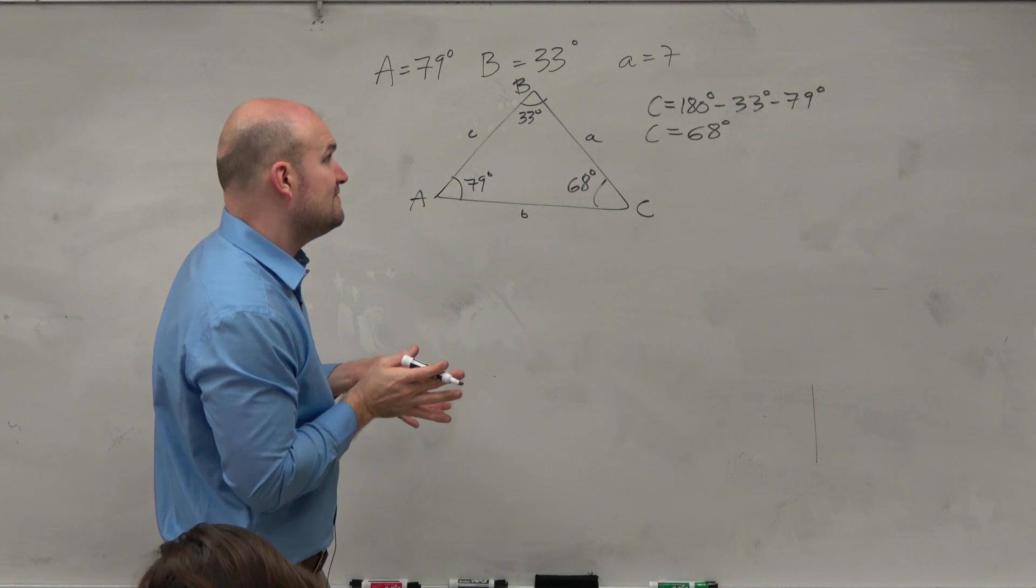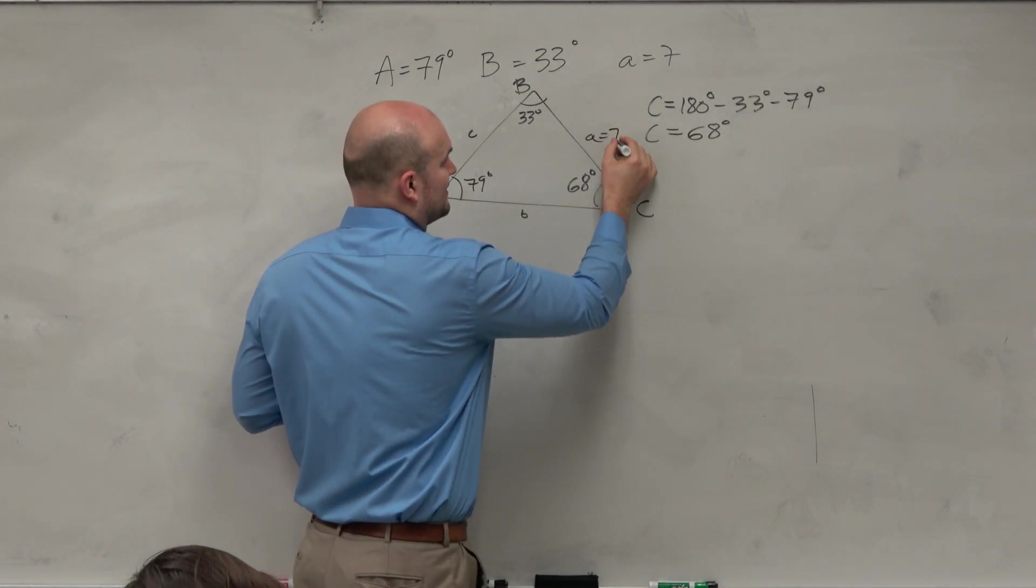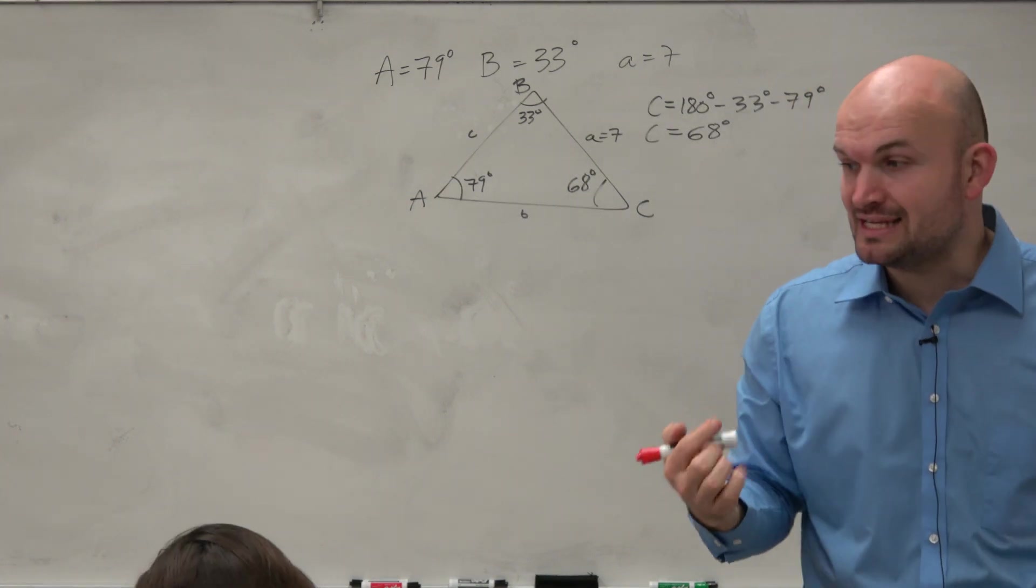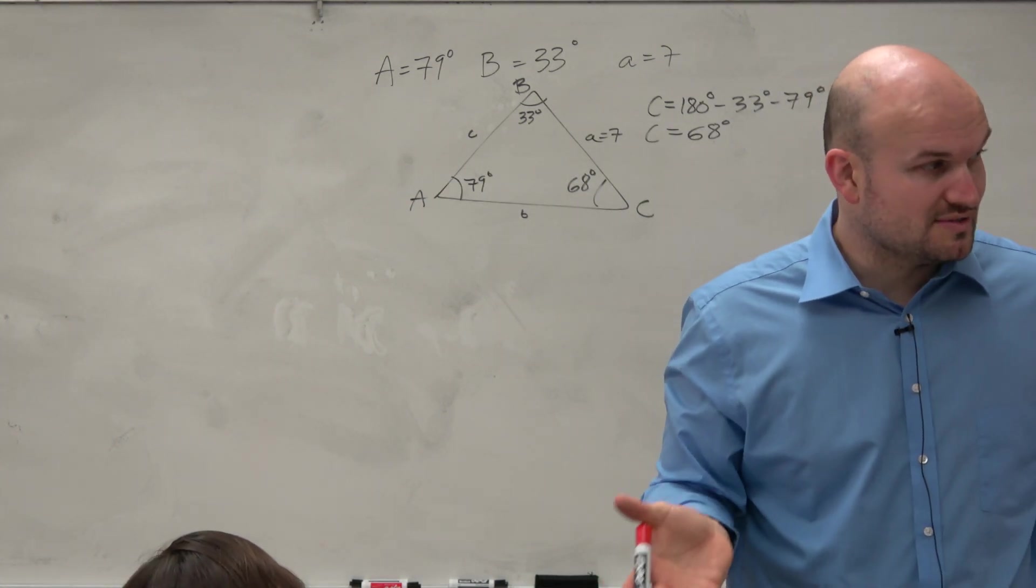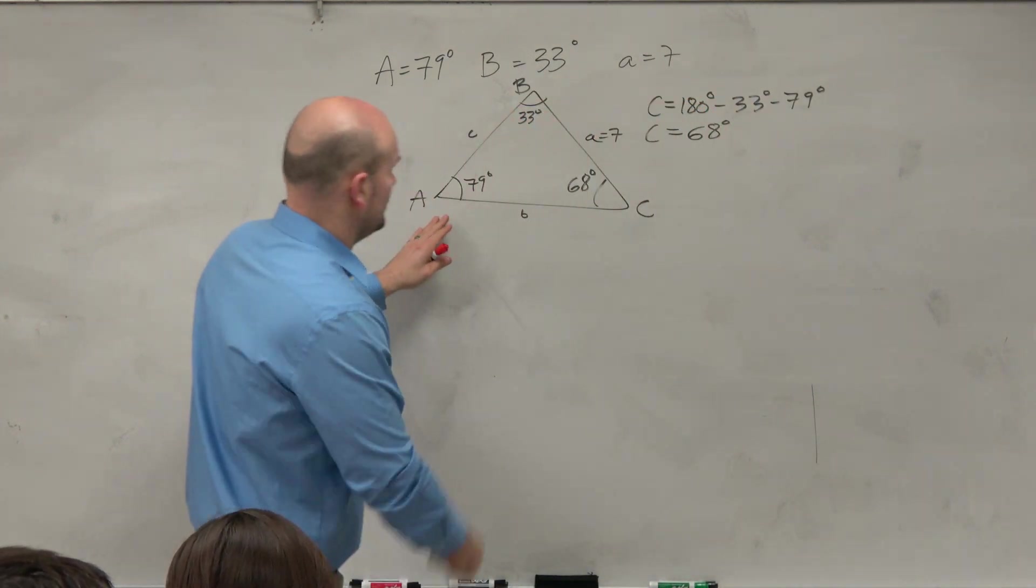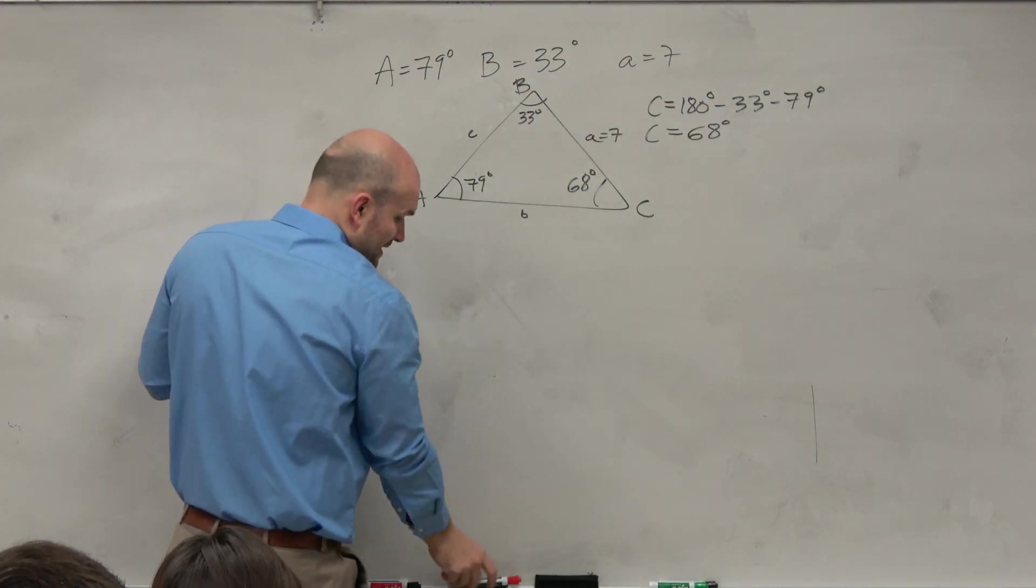All right, so now the only value we know is 7. So the nice thing about law of sines, the only time you're going to be able to do law of sines is when you have a proportion, meaning you have an angle and an opposing side. It's the only time you can do it.